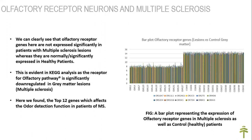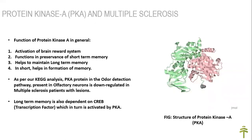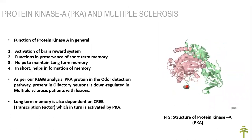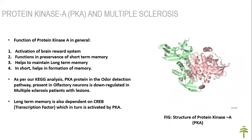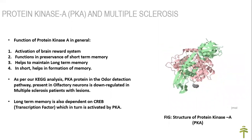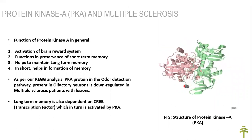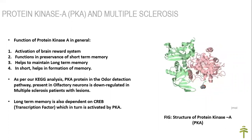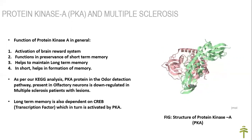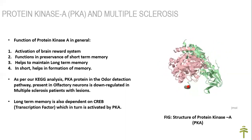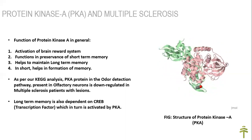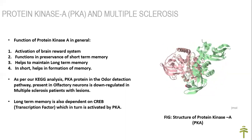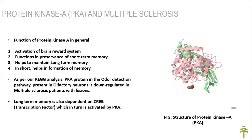The top 12 genes are shown in the bar plot. In the adult mammalian brain, approximately 250 protein kinases are expressed, but only a few are currently known to enable learning and memory. Protein kinase A plays several roles, including activation of the brain reward system and functioning of short-term and long-term memory. The downregulation of protein kinase A suggests it could be a possible cause of loss of cognitive functions in MS patients, as protein kinase A is responsible for cognitive functions and retention of short-term and long-term memory.